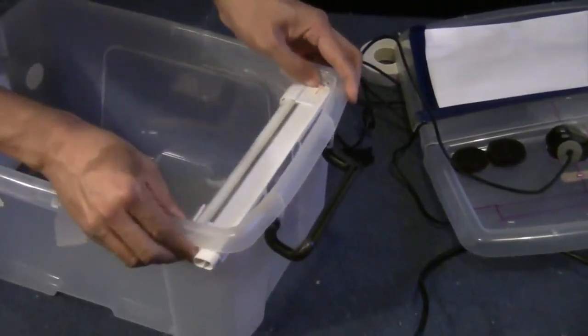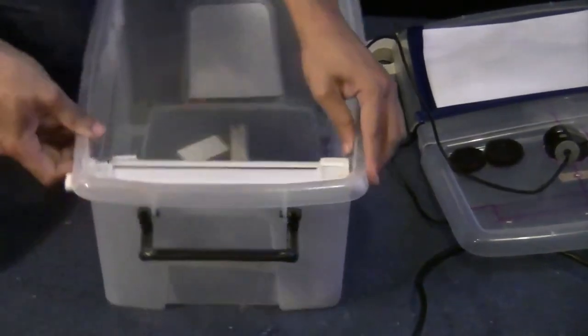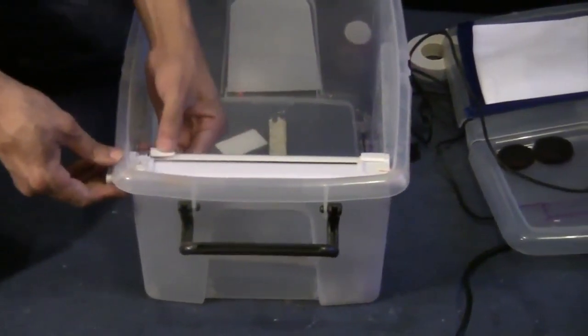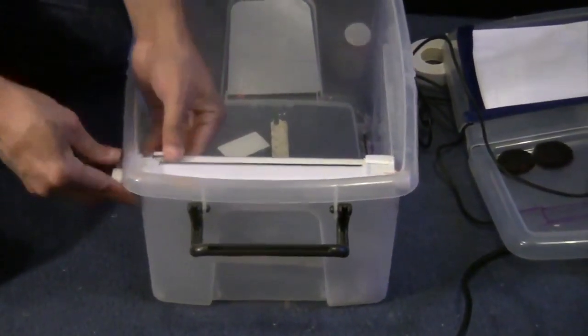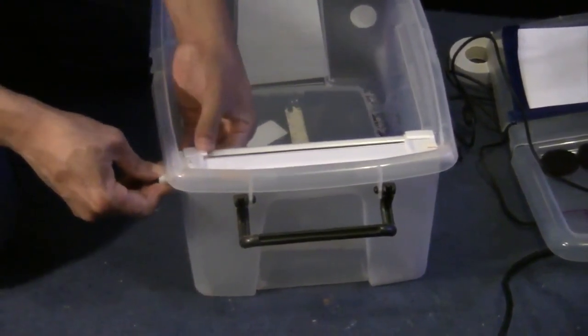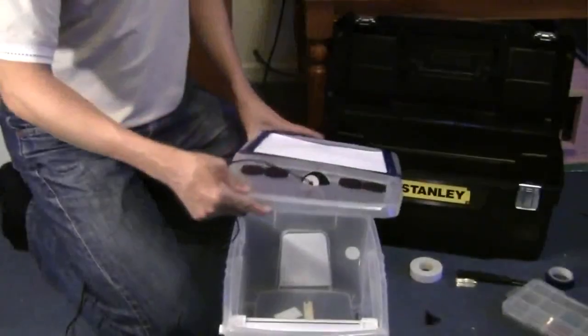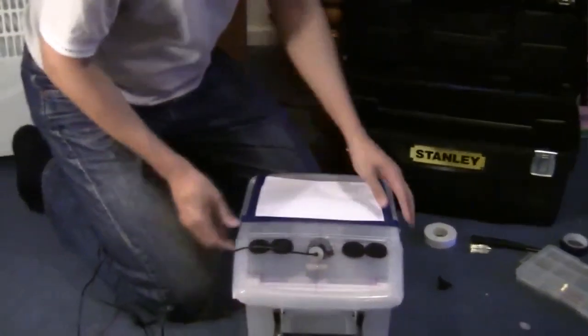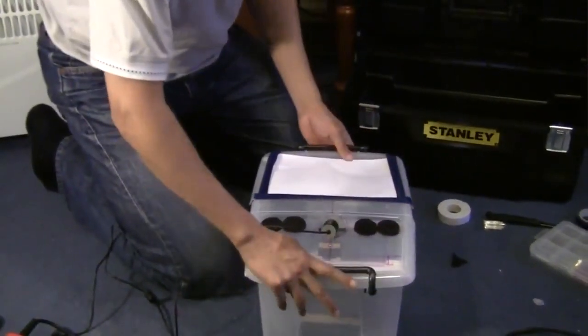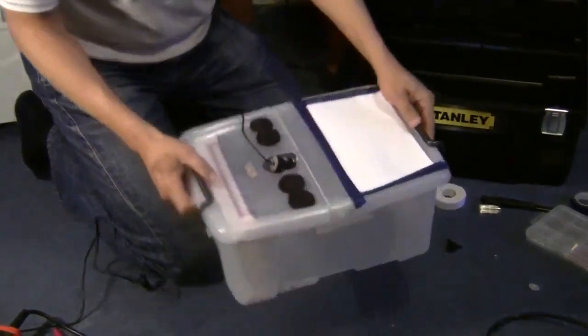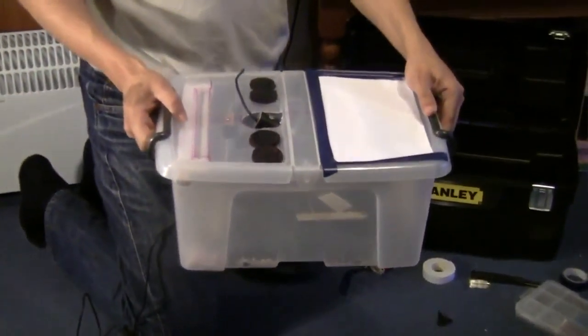Holes were made on each side of the plastic box to accommodate a fluorescent light. Here is the completed trainer box.